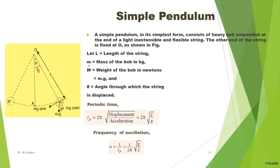This mg can be resolved into two parts. If this angle is theta, then this angle is also theta. We can resolve mg into two components: mg cos theta in one direction, and mg sin theta in the other direction.